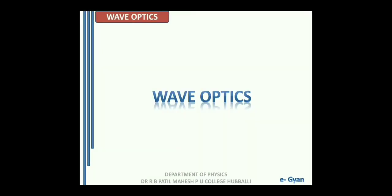Welcome students to the sixth lecture on the chapter Wave Optics. In lecture 5 we discussed the theory of interference, the conditions for constructive and destructive interference and the distinction between them. Now in this lecture we will move further to derive an expression for the fringe width, and finally we will try to understand the interference pattern and its intensity.